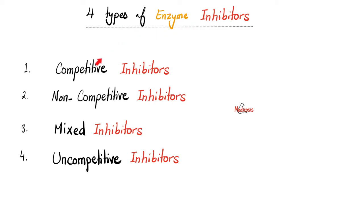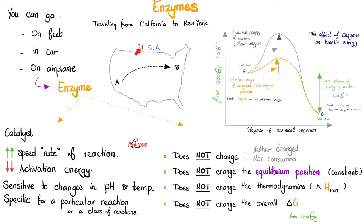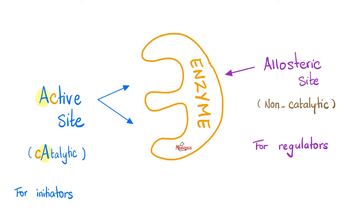There are four types of enzyme inhibitors: competitive, non-competitive, mixed, and uncompetitive. Enzymes facilitate the reaction — they are catalysts. They increase the speed, lower the activation energy, are not changed by the reaction, do not change the equilibrium position, do not change the thermodynamics, and do not alter your delta G. Enzymes have two doors: the front door is the active site, and the back door is the allosteric site.